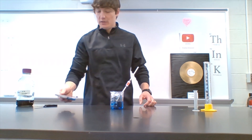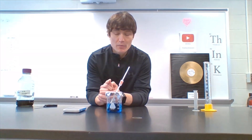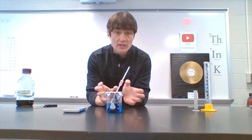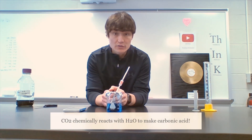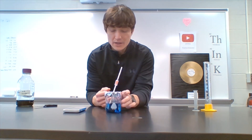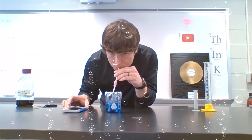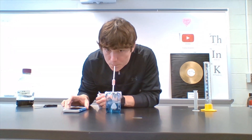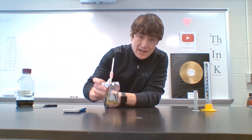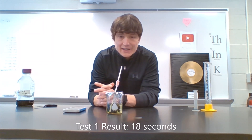Next I'm gonna get a timer on my phone. I'm gonna blow bubbles into the beaker and stop the timer when my pH indicator changes color. This is gonna indicate that I have turned the liquid in this beaker into carbonic acid by introducing CO2 into the water. And as you can see, my liquid has turned to a light greenish color and it took about 18 seconds for that change to happen.